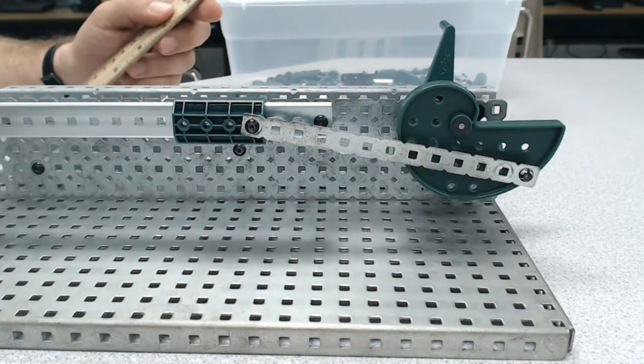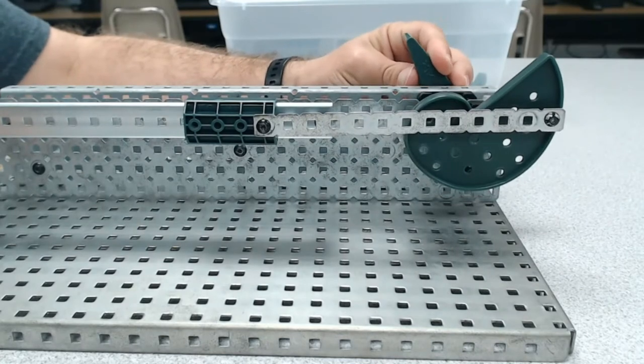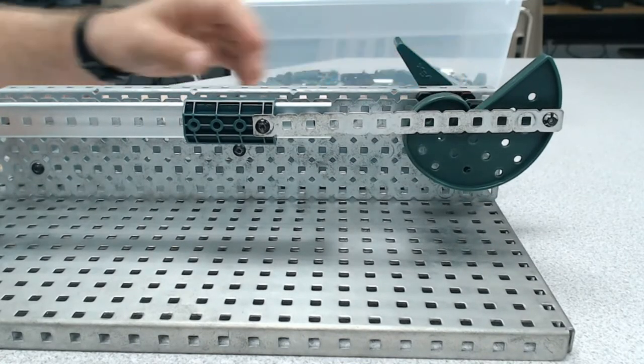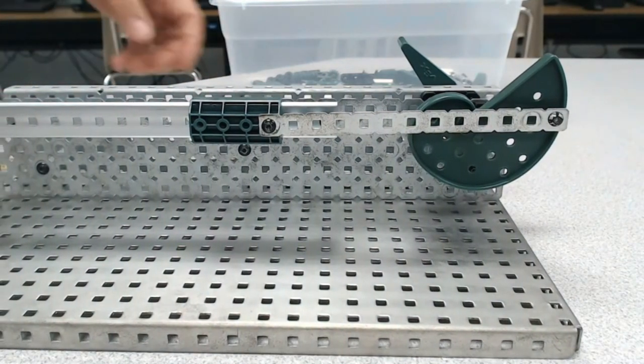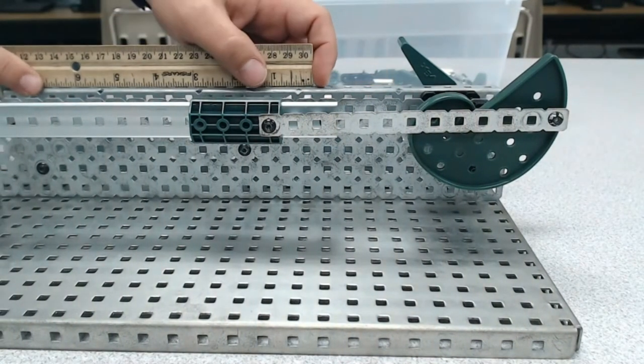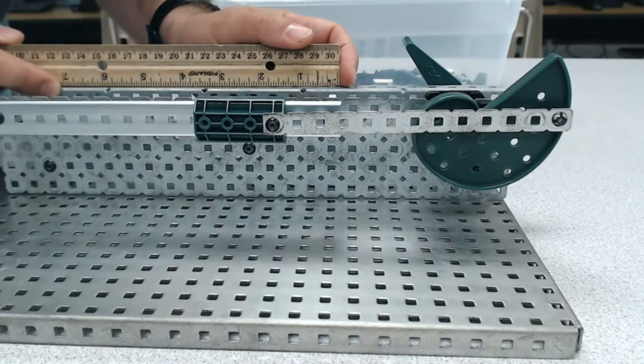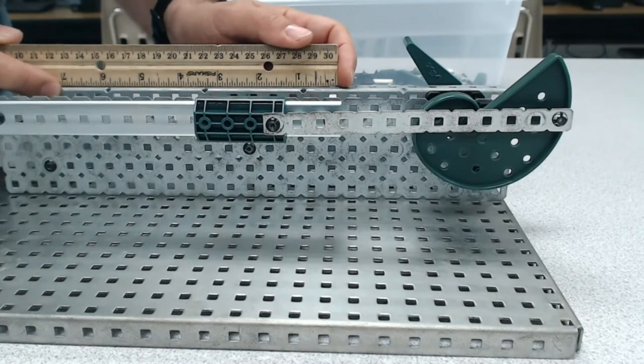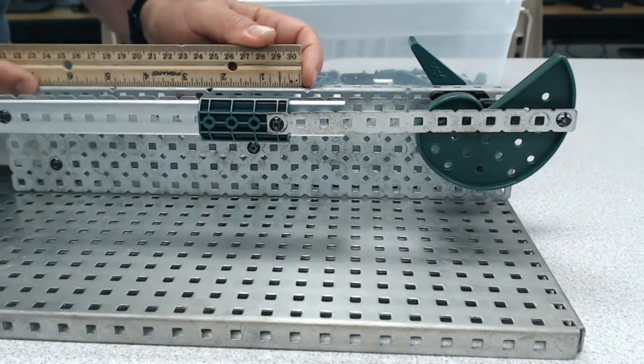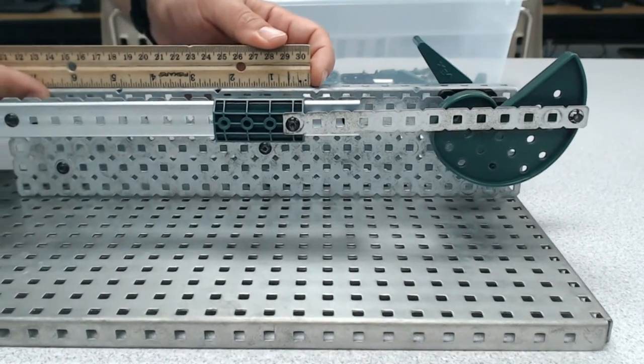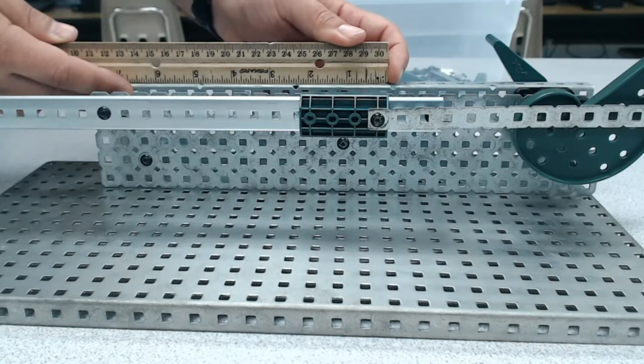So to do that, I've got a ruler here. Let's get this at one end, at the extreme. We're at one end of this slide. I'm going to line this ruler up so we're right at zero. Due to the angle of the camera, let's get this lined up. Looking down on it, here is zero. Let's move that a little bit so it lines up in the camera too.